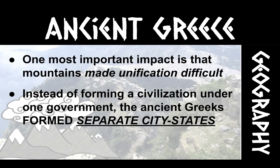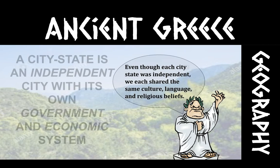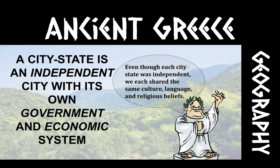What is a city-state? A city-state is an independent city with its own government and its own economy. One thing to understand is that the Greek city-states were independent — but they did share basically the same culture. They all spoke Greek and shared the same religious beliefs, the belief in the Greek gods and goddesses. But they all had their own different economic systems and their own separate governments.